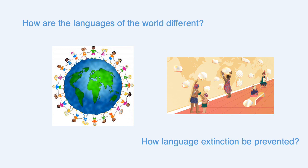A really fun part is the one about language diversity — how languages are different and why it matters. We also talk about language extinction. There are around 7,000 languages in the world, but one language dies every 14 days. So we talk about why that's important, why it might not matter to some, and what we can do about it.